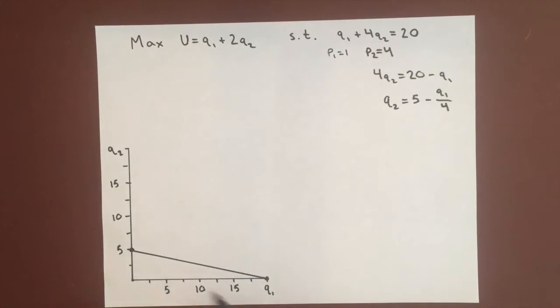This here is our budget constraint. We can buy any combination of Q1 and Q2 that falls on this line or within it.